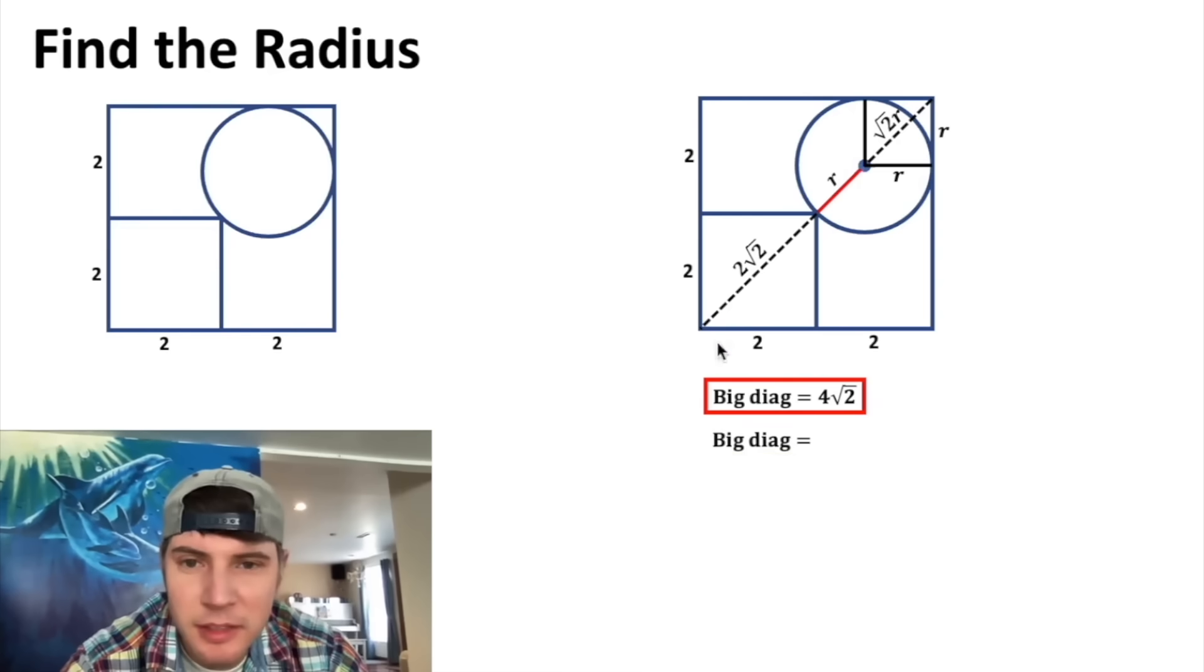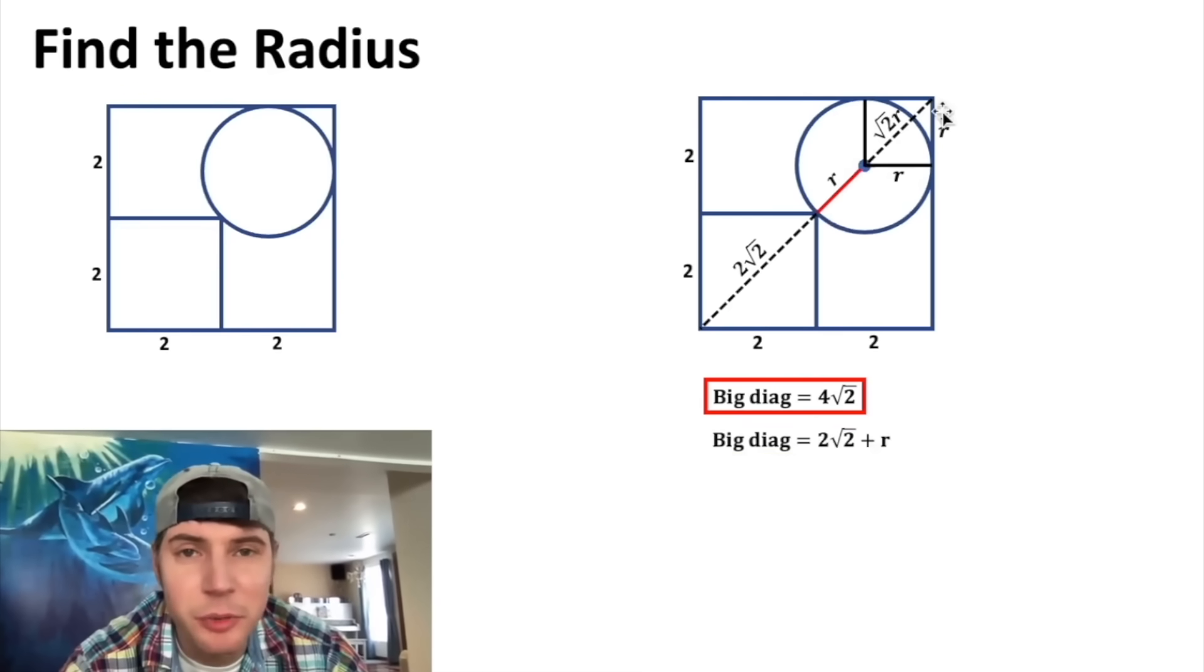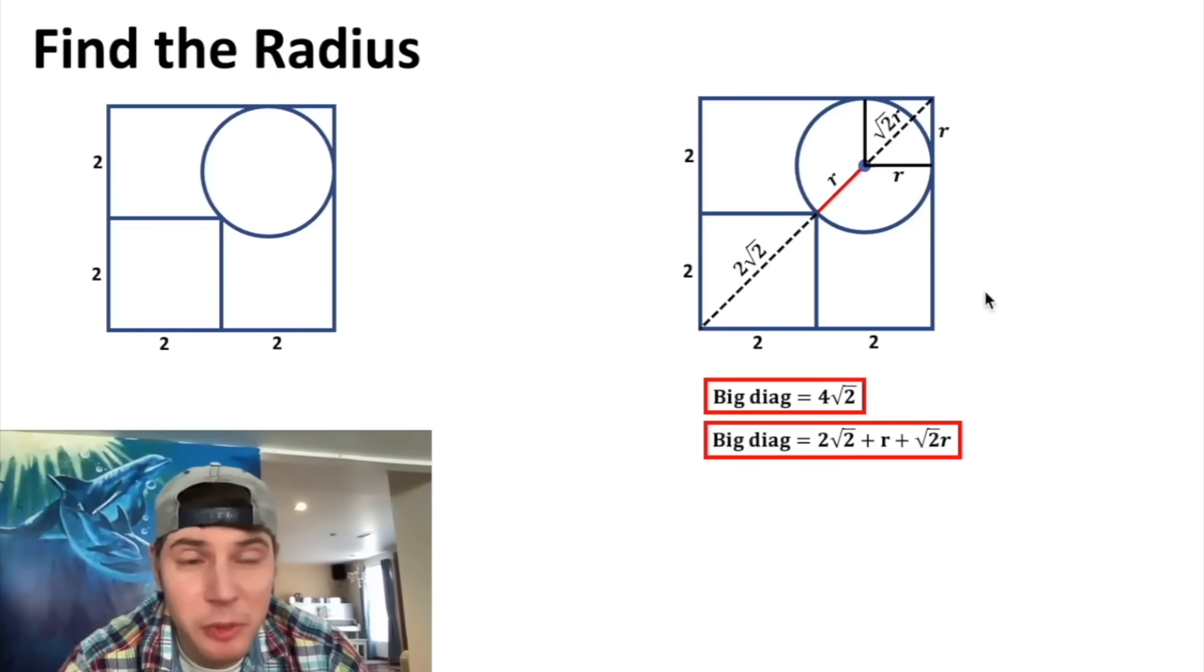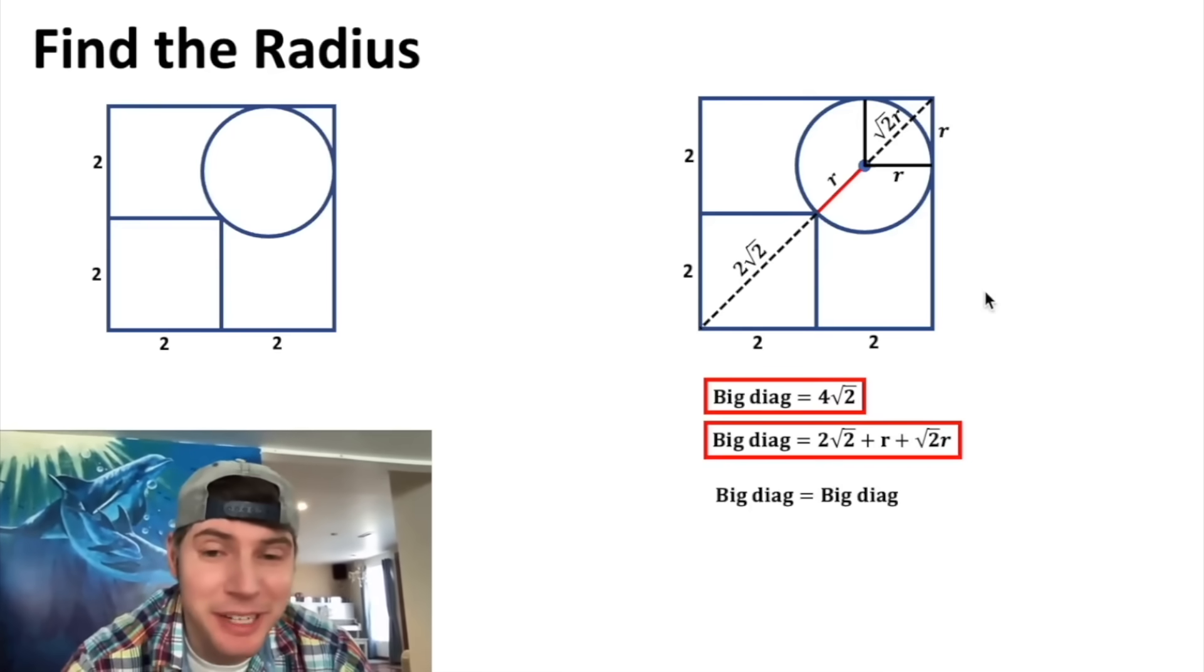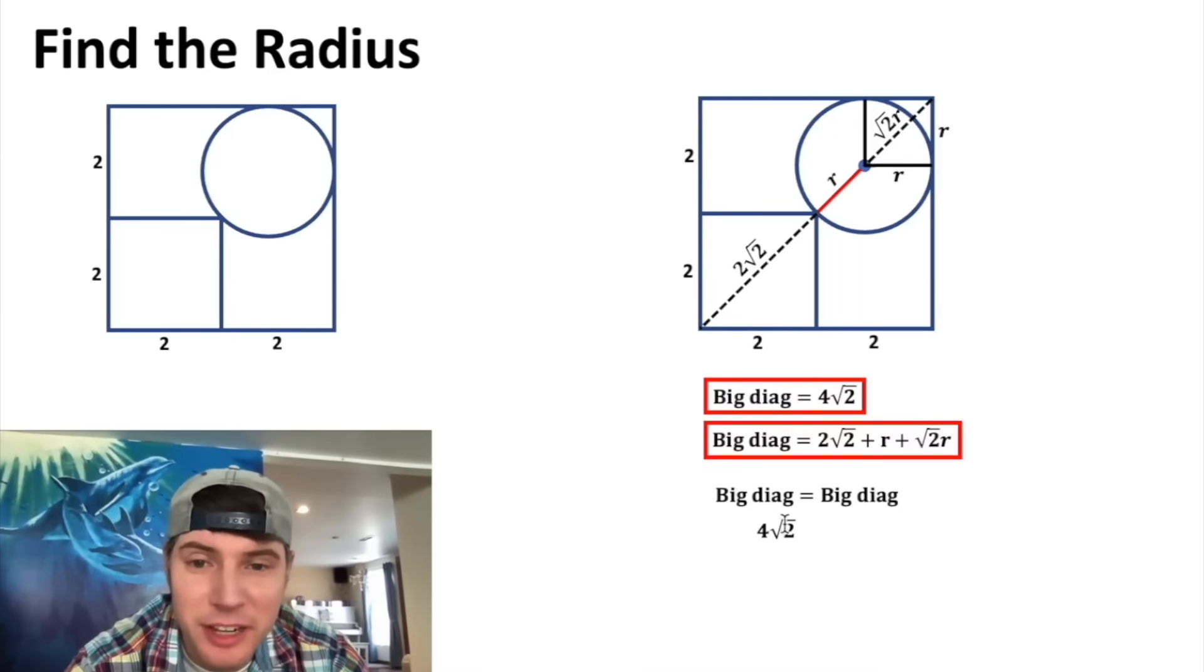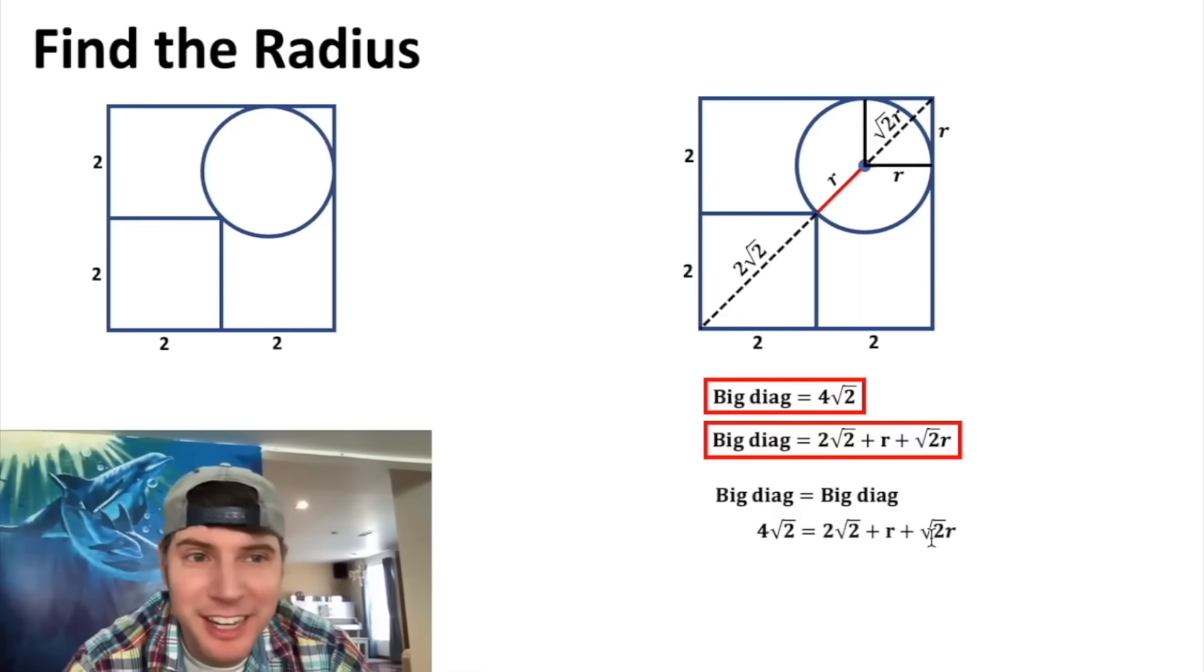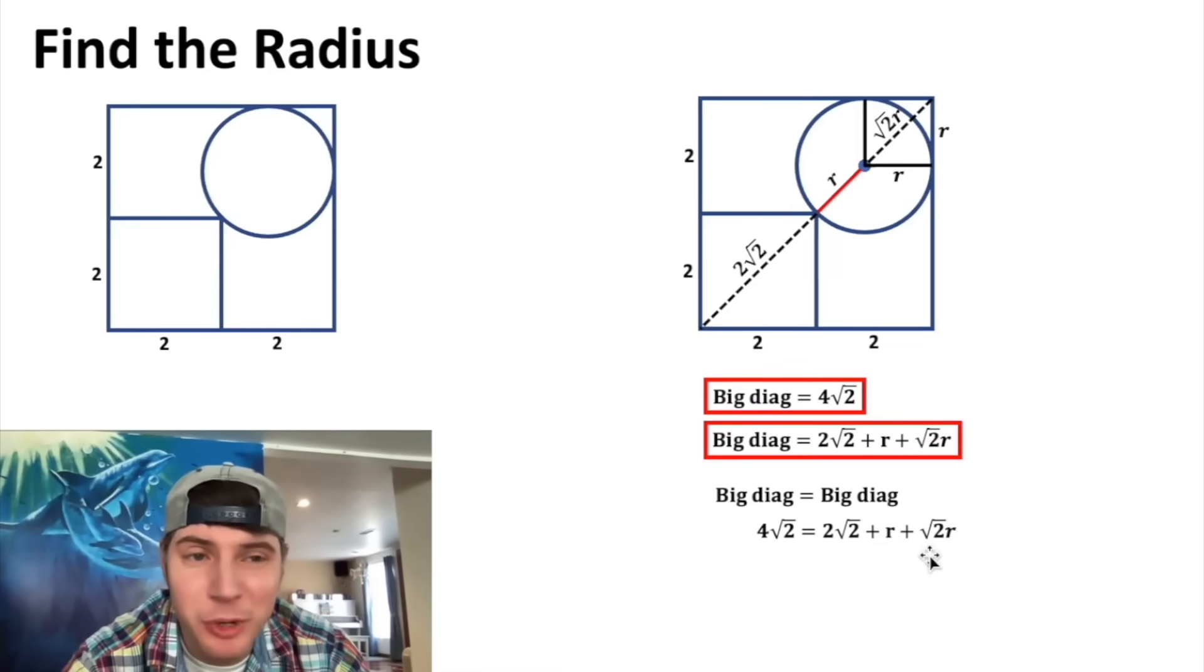Clean things up a little bit, and now what do we have? Big diagonal again, this time it's equal to this diagonal here: the 2√2 plus the r plus the √2r, and we can put a box around that. But we know the big diagonal has to equal the big diagonal, so we're just going to set the 4√2 for this side of the big diagonal equal to all of this. And now we only have one variable r and one equation.